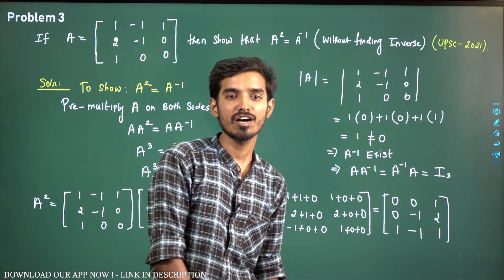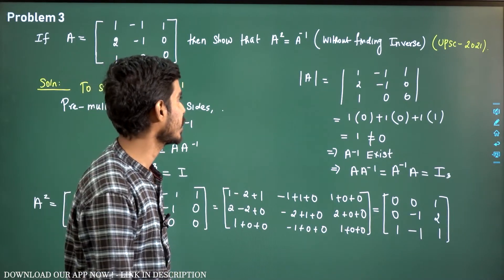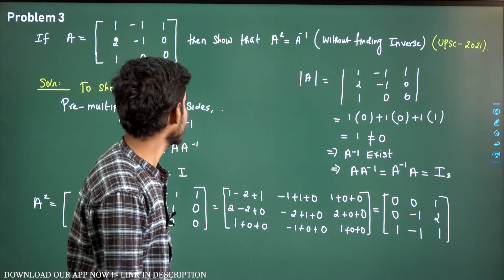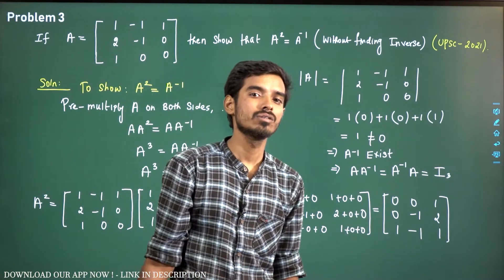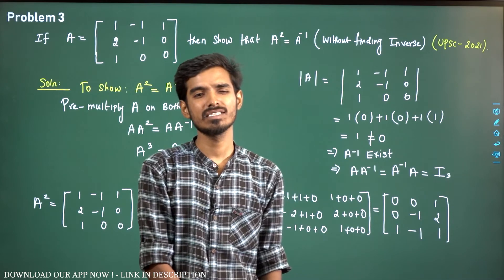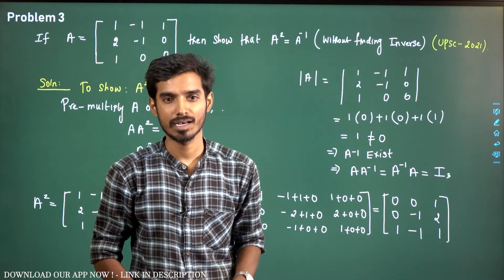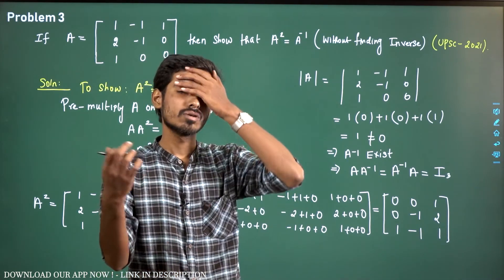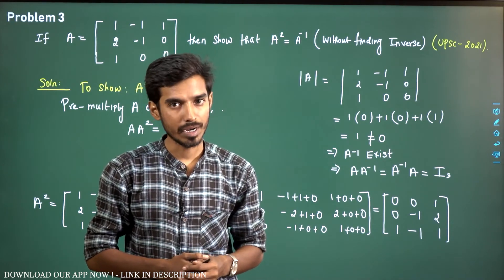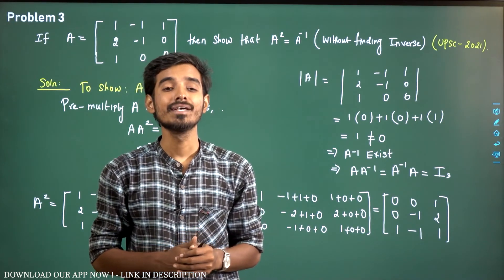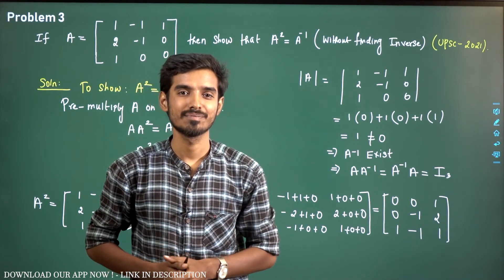We have shown A cubed equals I, which is the same as A squared equals A inverse. In order to show A squared equals A inverse, it is enough to show A cubed equals I. We multiplied A three times and confirmed A cubed equals the identity matrix of order 3. Very simple problem. As of now we have solved three problems. Linear Algebra is very easy once you understand all the concepts. The next class we will start problem number 4. Thank you, all the best.